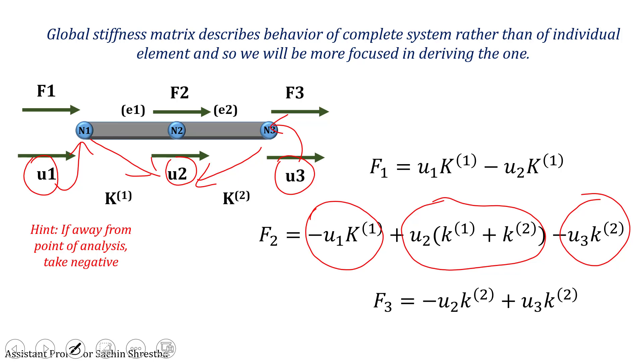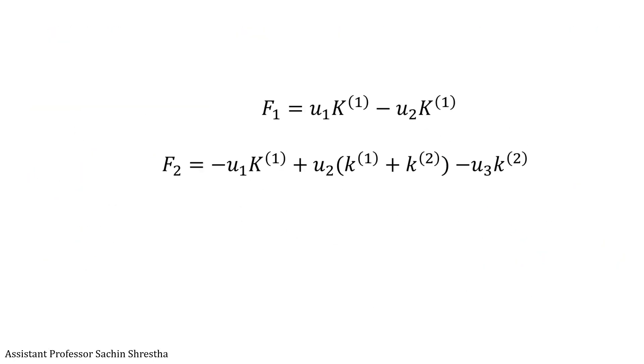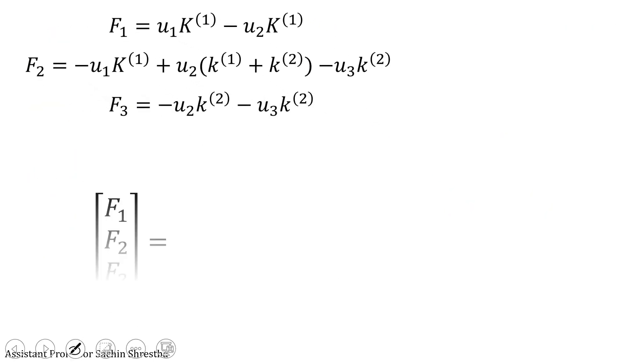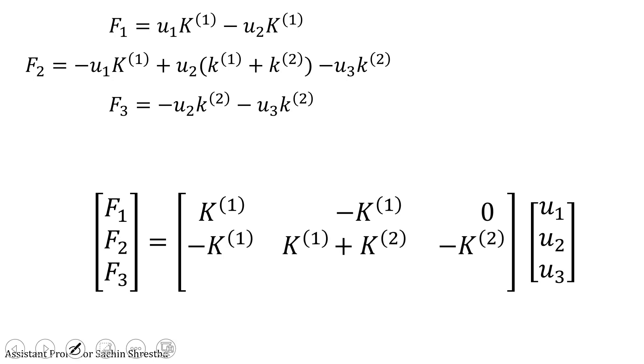Combining these three equations in the form of matrix, we first arrange the force vector, then the displacement vector, and then take the magnitude of the displacement vector to obtain the stiffness matrix. This way we can obtain the global stiffness matrix for the two-element system with three nodes.